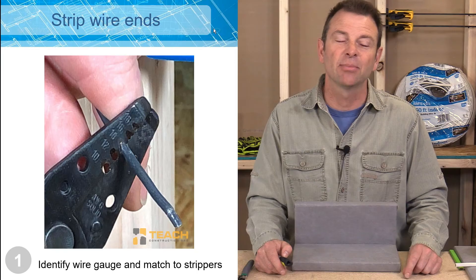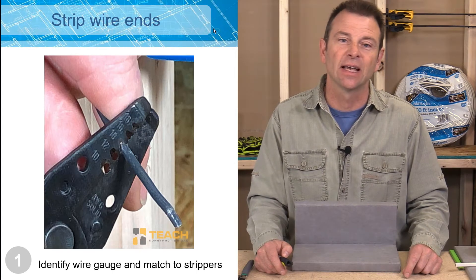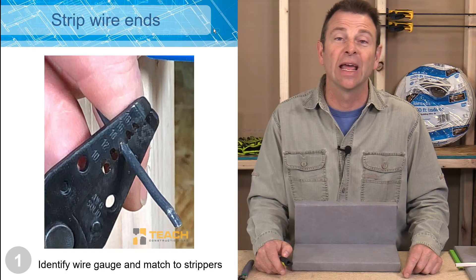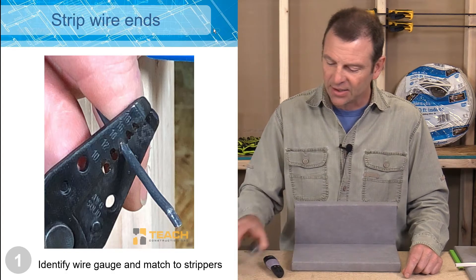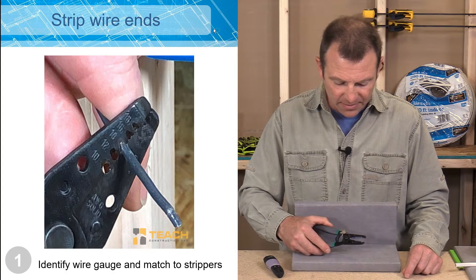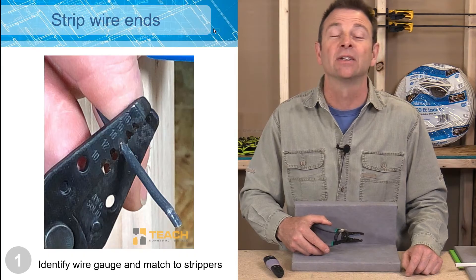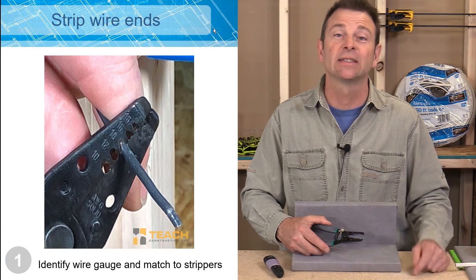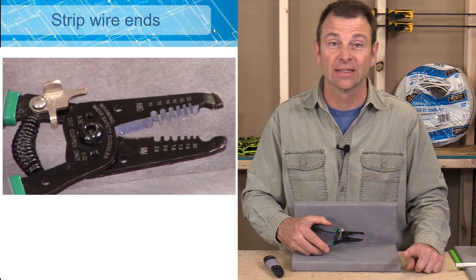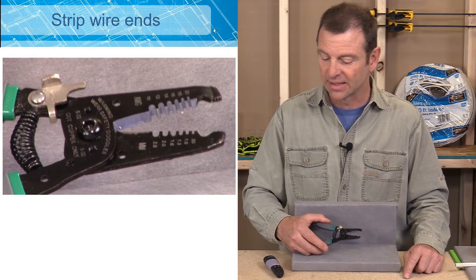So you can see here on the presentation, it starts with a 10 gauge set of notches and it goes up to an 18 gauge. This set here is going to go from 10 gauge up to 20 gauge. So I have more of a range on this set of wire strippers than on the set pictured in the presentation.